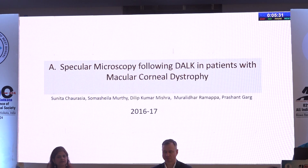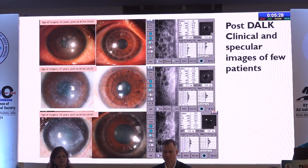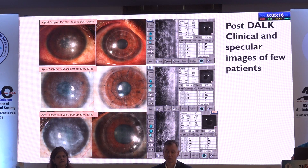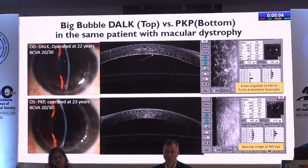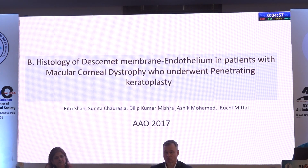We looked into specular microscopy following DALK in patients with macular corneal dystrophy. This is what a typical specular microscopy in a macular corneal dystrophy eye that has undergone DALK looks like. In three different cases, you can see Fuchs-like excrescences or guttae following DALK. This is one patient where one eye had DALK and the other eye had PK — we can see the specular imaging of the PK eye versus the DALK eye and how variable it is. Visual outcome is good, but there is a lot of morphological variation on endothelial imaging between the two eyes.